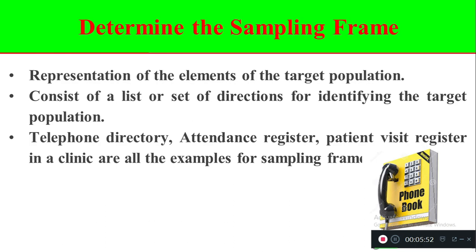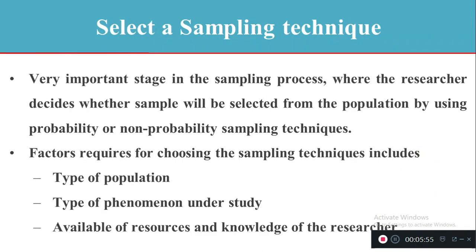The third step is selecting a sampling technique. Once you have the sampling frame, it is easy to select the sample using either a probability sampling technique or a non-probability sampling technique. There are two types: the first is probability, otherwise called random sampling; the second is non-probability, otherwise called non-random sampling technique.